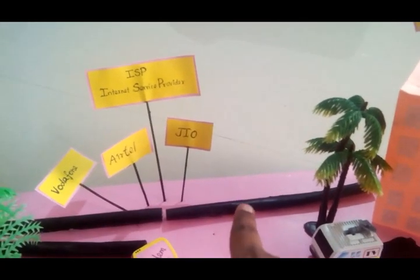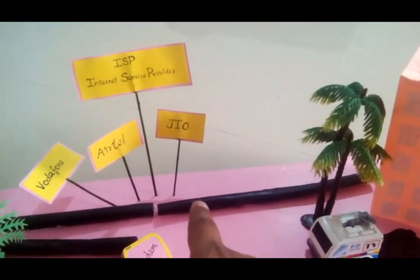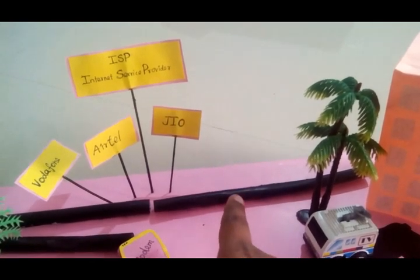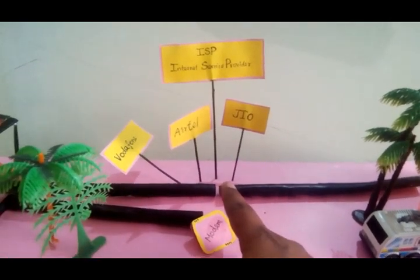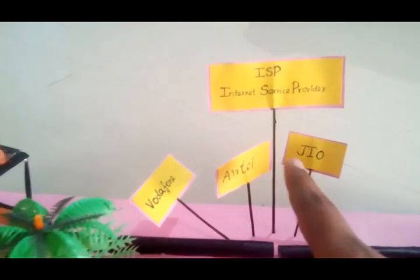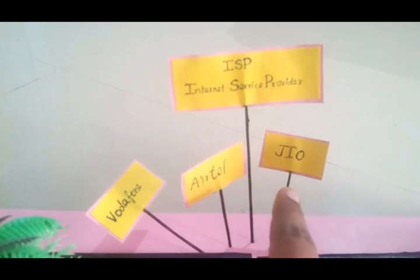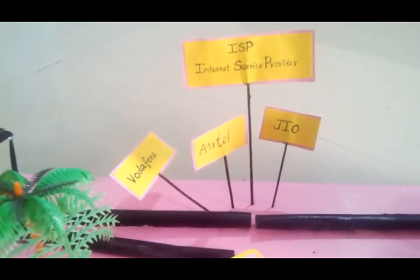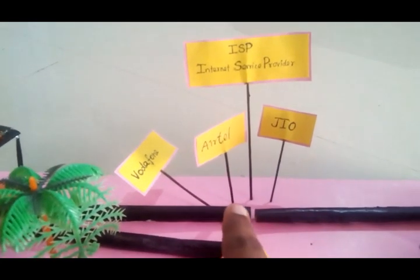If you are searching for the information, in the data center there is a flow of optical fiber cable. This optical fiber cable is the backbone of the internet. There is a provider — if you are using an internet service provider, you can get the internet. We have ATL, Vodafone, and Jio. They are called Internet Service Providers.